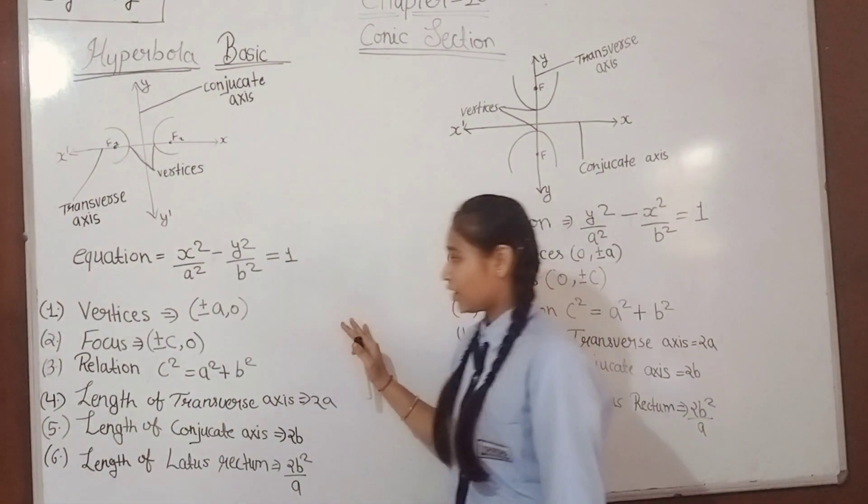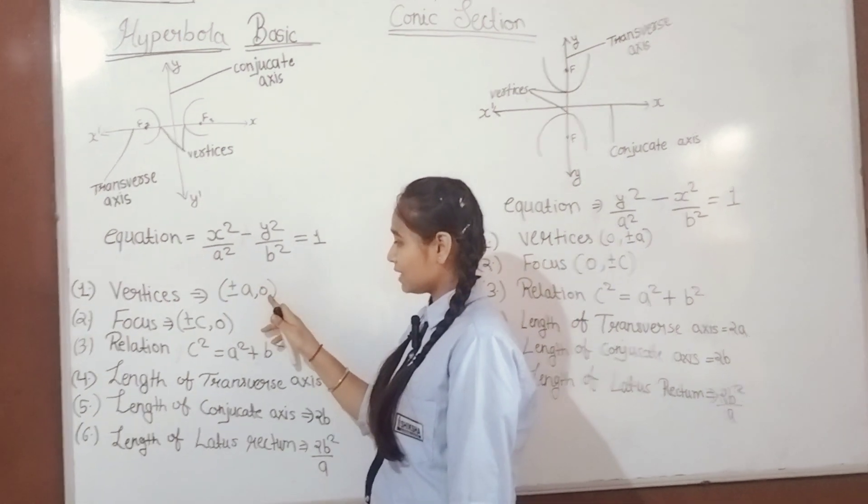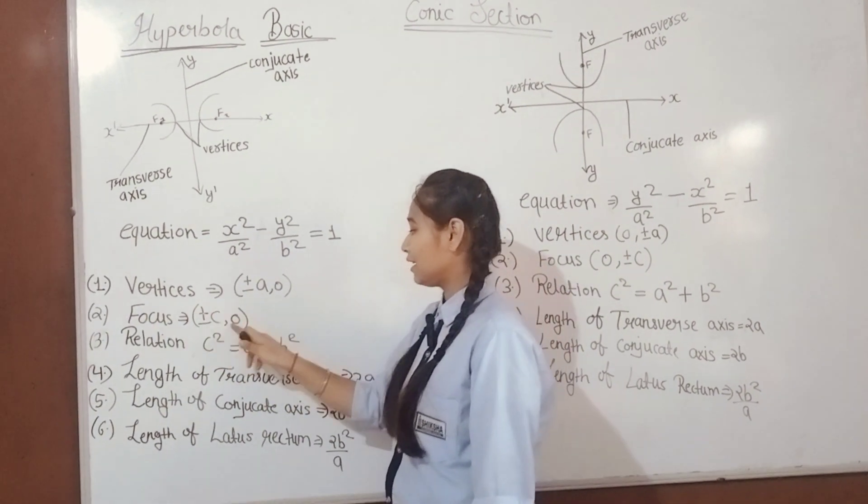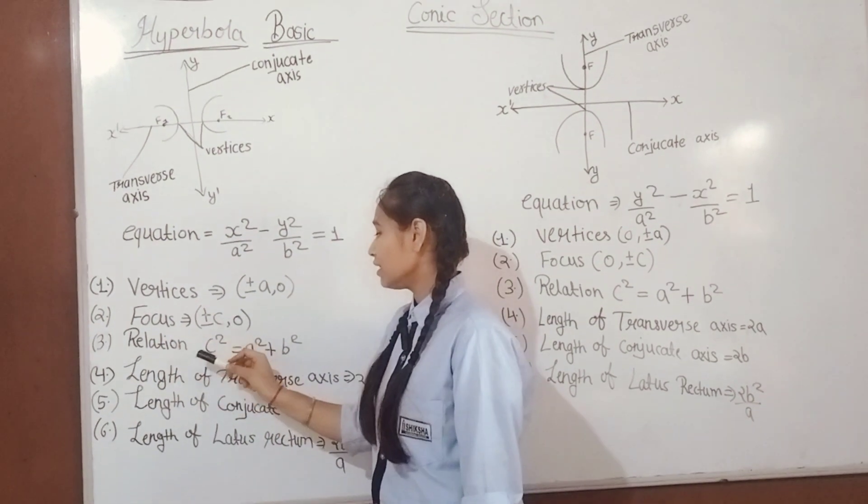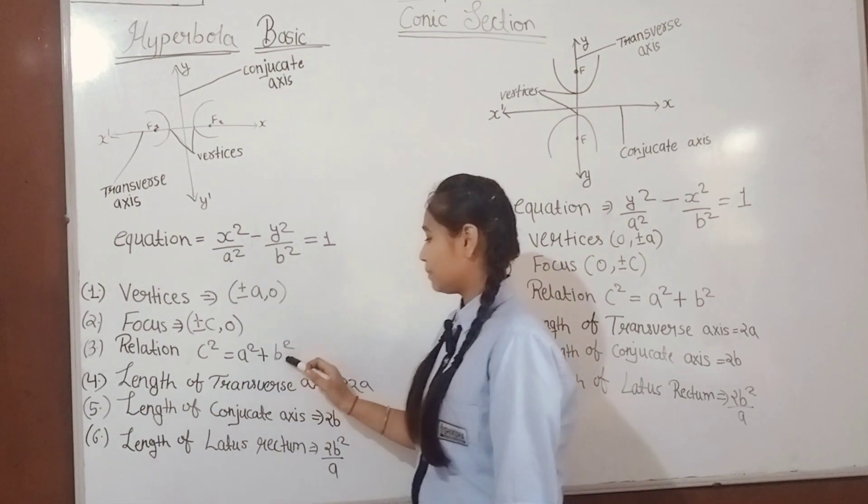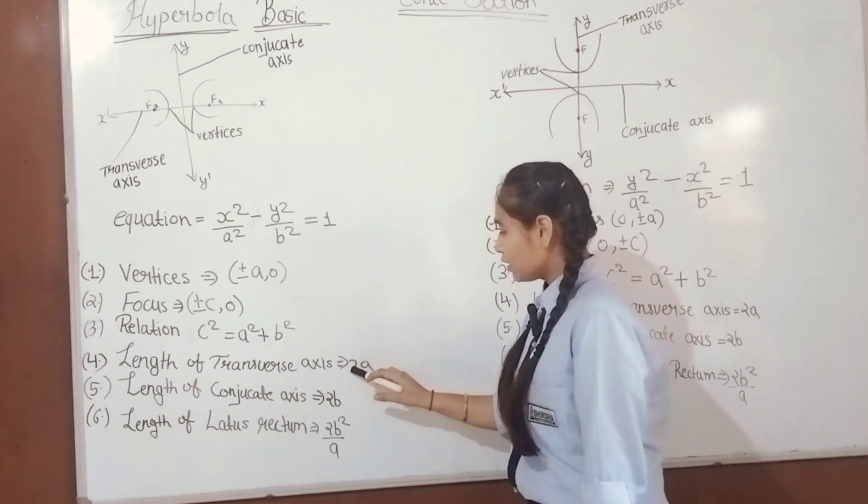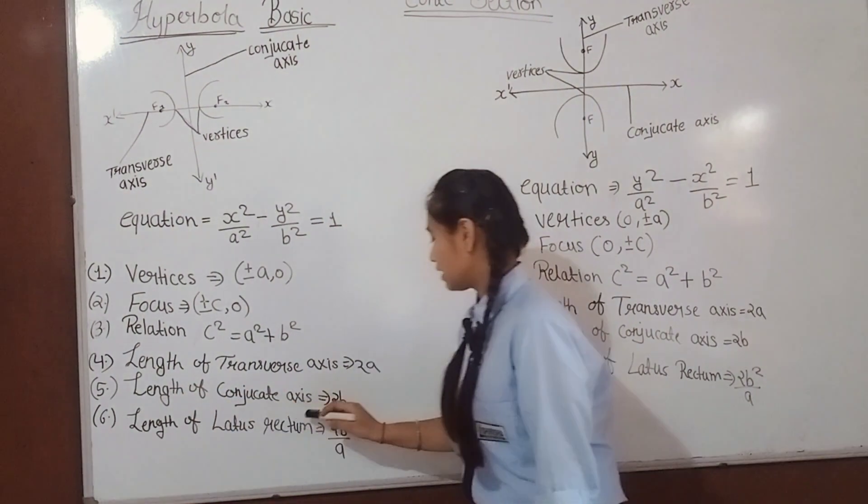Then apply these formulas: vertices (±a, 0), foci (±c, 0), relation c² = a² + b², length of transverse axis 2a, length of conjugate axis 2b, and length of latus rectum 2b²/a.